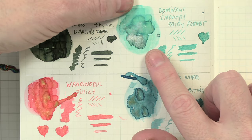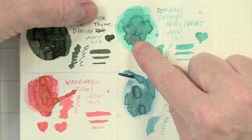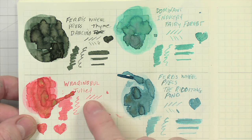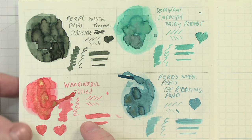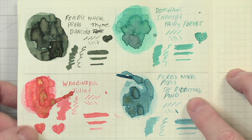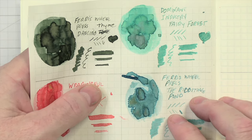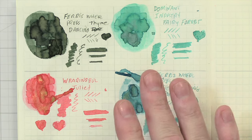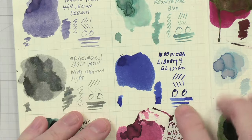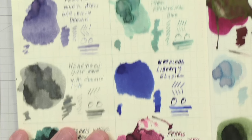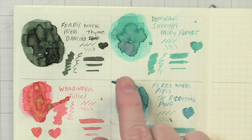Here we have the Dominant Industry Fairy Forest. This has a really nice glimmer to it. It also pulls up really good into like a darker teal color. It's really nice. Here we have the Wearingall Juliet. This is a pink. As you can see, it has a very nice gold glimmer to it. So pretty, I love that. And then we have the Ferris Wheel Press, the Riveting Pond. And this is also very pretty. It has like this greenish gold shimmer to it in this teal. So very pretty colors. I'm looking forward to writing with these. And then just to show you what the Noodler's looks like, this is the Noodler's Blue, and then this is the black that I use.